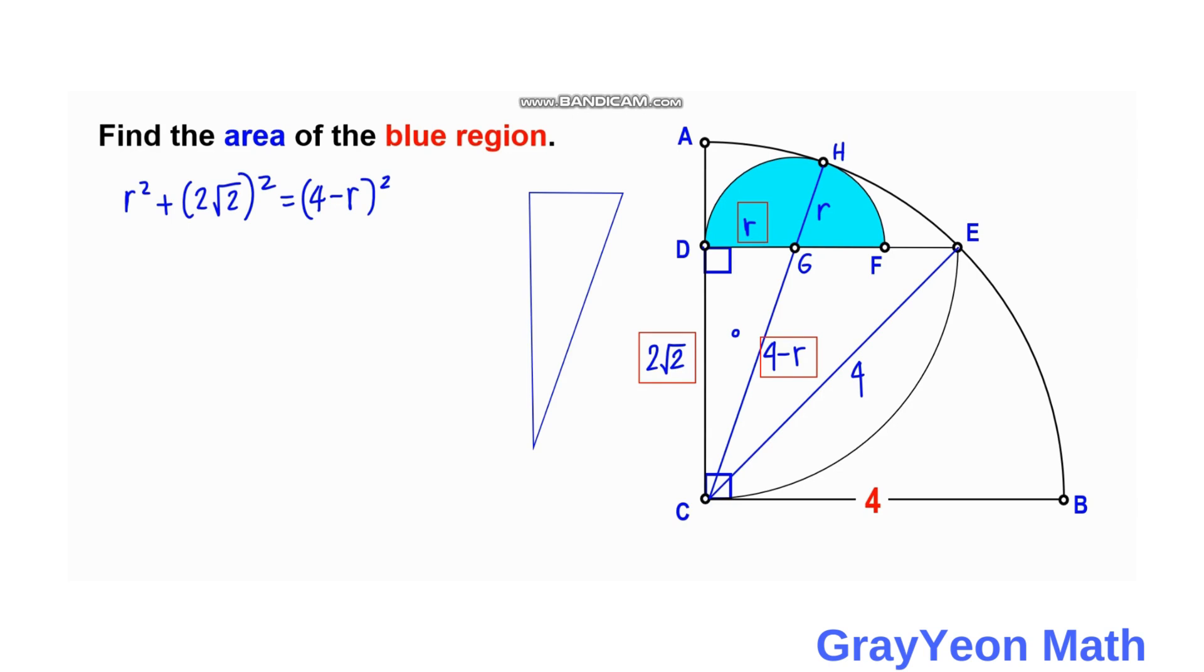Next we isolate this triangle DGC, and this is the right angle at D. This is one leg r, and this is 2 square root of 2, and this is 4 minus r.